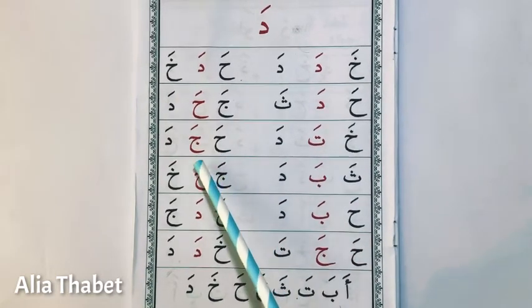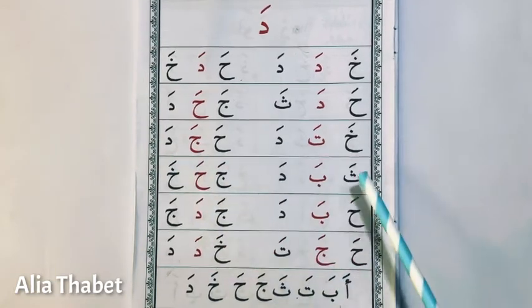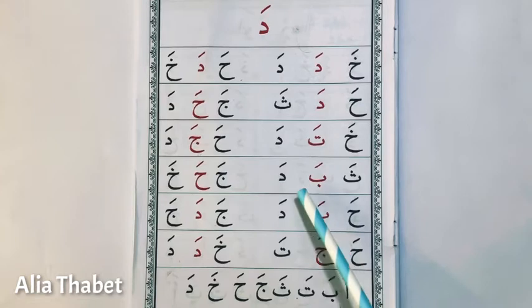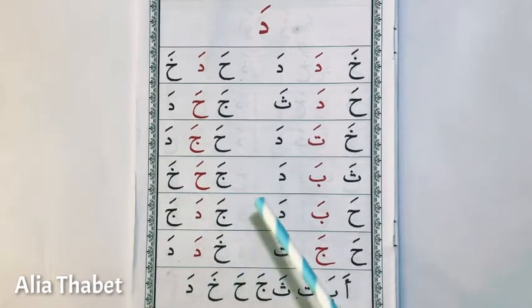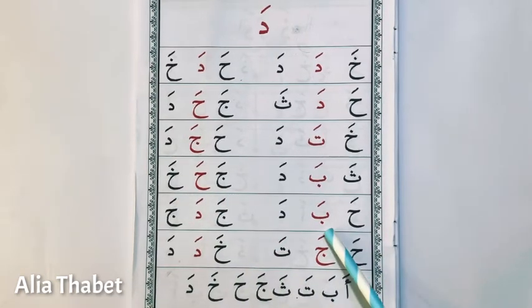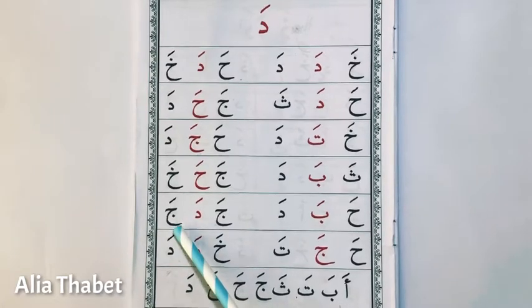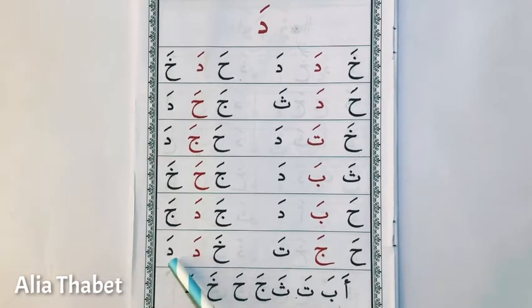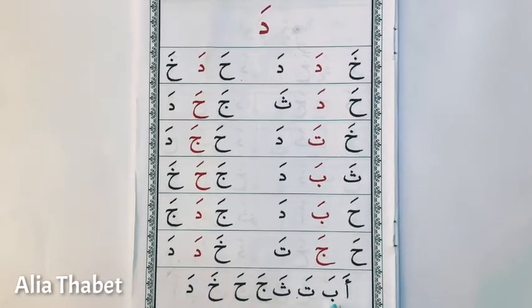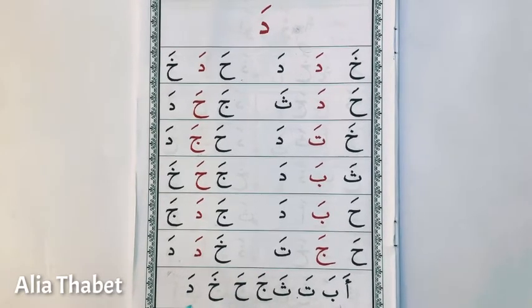خَا، تَا، دَا. خَا، خَا، دَا، خَا، دَا، خَا، بَا، تَا، سَا، جَا. خَا، خَا، خَا، دَا.